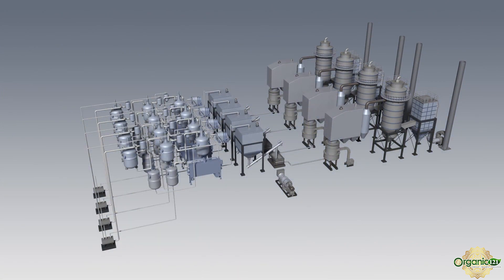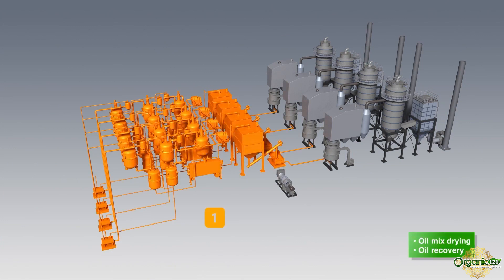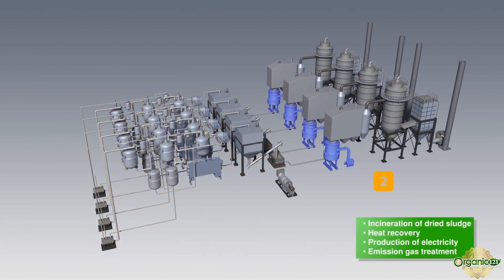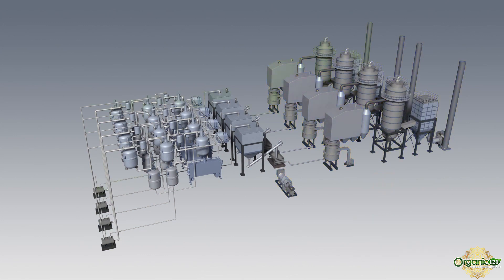Our technology is divided into two main processes. First process is the drying of the wet oil sludge. This is followed by second process which includes incineration of dried sludge, heat recovery, use of heat for the drying of wet sludge, production of electricity and gas emission treatment in our design.